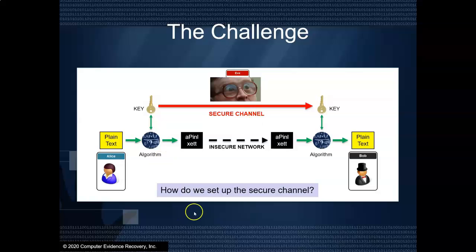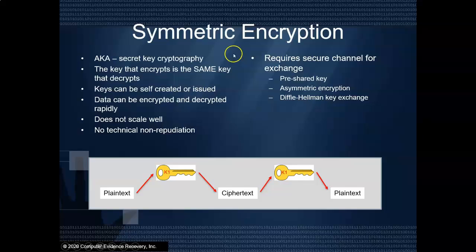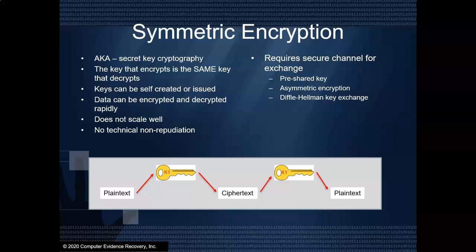The first type of encryption we're going to talk about is symmetric encryption. With symmetric encryption, the idea is that the key that encrypts the message is the same key that decrypts the message. So there's only one key. This key can be self-created or it can be issued from a key server. A large amount of data can be encrypted and decrypted very, very quickly.